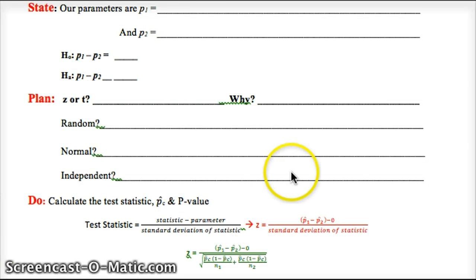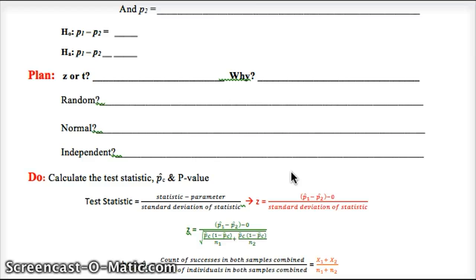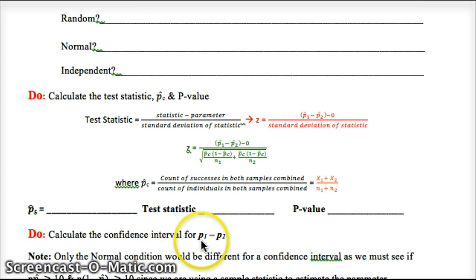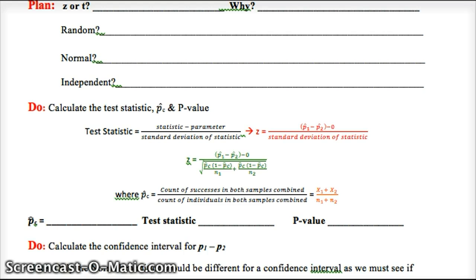We're going to generate a confidence interval and a significance test for this. We're going to do state, plan, do, and conclude just like every other problem. Here we're going to do an interval and a significance test, so we're going to go over the do step twice, once for a significance test, once for a confidence interval, and we're going to discuss what's a slight difference in the conditions for them. Then you're going to use your calculator to calculate whether there's a significant difference based on the proportion of patients who had strokes from those two groups.